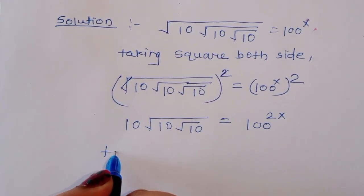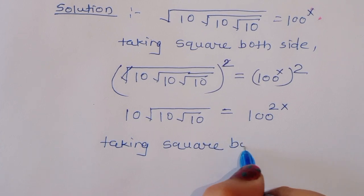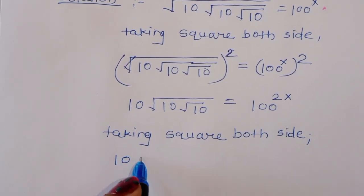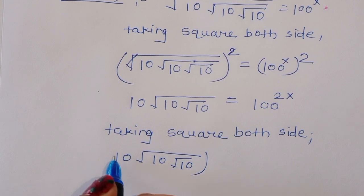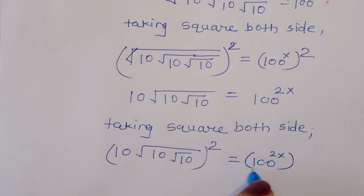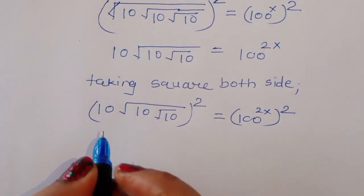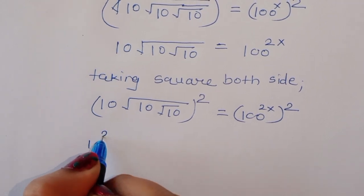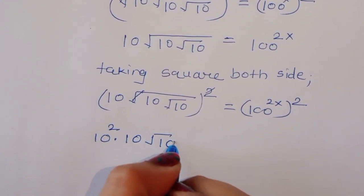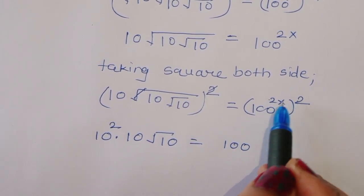Now again we can take square. Taking square on both sides: 10 times square root of 10, whole square is equal to 100 raised to 2x, squared. This gives us 10 times square root of 10 times square root of 10 — this square root of 10 whole square root of 10 — is equal to 100 raised to 4x.